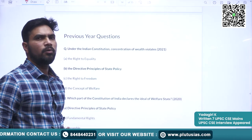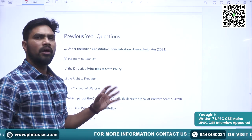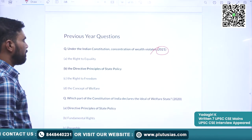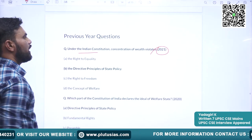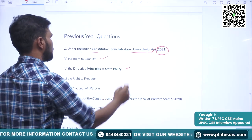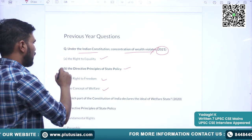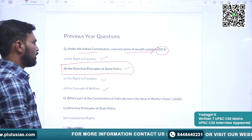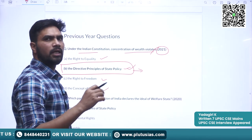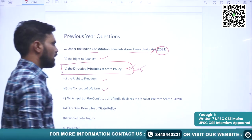This is some information about the Directive Principles of State Policy. Now we will see some previously asked questions in the prelims examination. The first question, asked in 2021: Under the Indian Constitution, concentration of wealth violates which particular part? Options are: right to equality, Directive Principles of State Policy, right to freedom, or right to concept of welfare. The correct answer is Directive Principles of State Policy — there is a particular provision which says the state should ensure no concentration of wealth in few hands. Option B is correct.